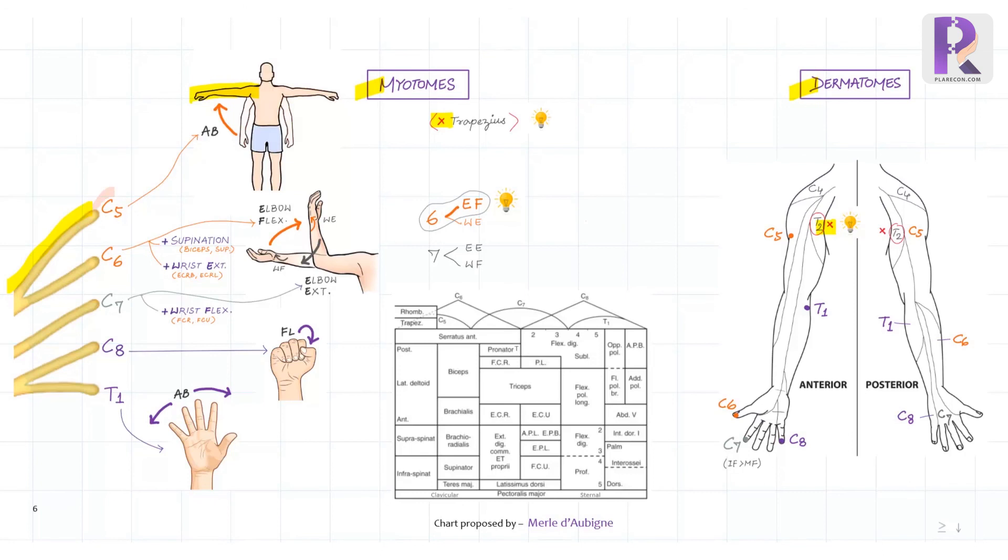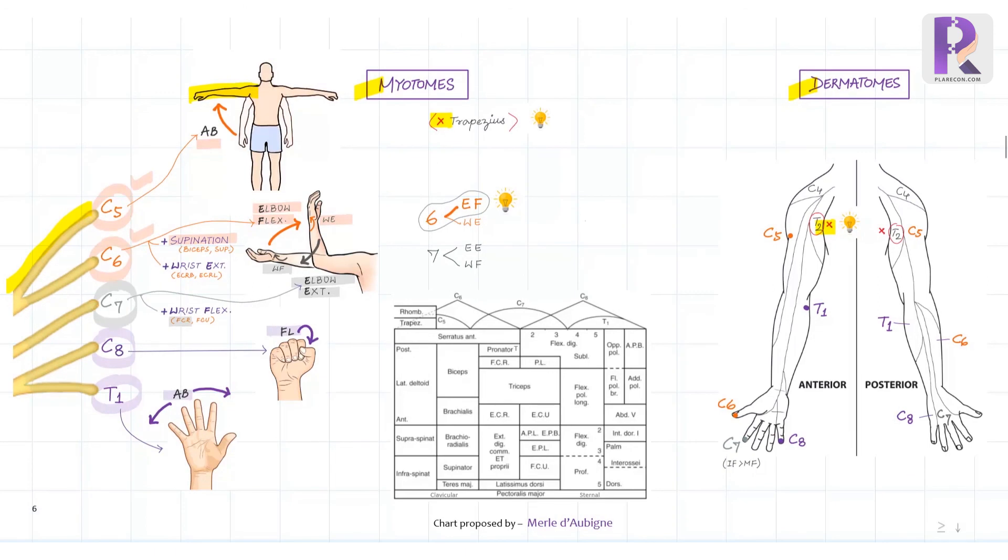Like C5 status can be known by testing shoulder abduction which is brought about by deltoid and supraspinatus, while elbow flexion by brachialis and biceps and wrist extension by ECRB and ECRL. And also supination by biceps and supinator are brought about mainly by C6 and also C5. C7 is involved in elbow extension by triceps along with C5 and C6 and also wrist flexion by FCR mainly, while C8 is tested by checking finger flexion or power grip.